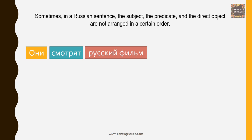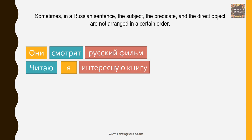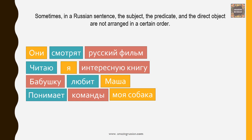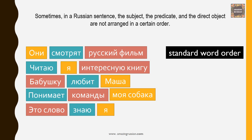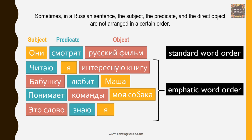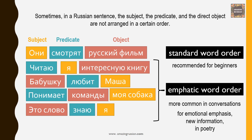Они смотрят русский фильм. Читаю я интересную книгу. Бабушку любит Маша. Понимает команды моя собака. Это слово знаю я. If we arrange the words in a Russian sentence like this, the meaning will not change. Only the first sentence is in standard word order — subject, predicate, object. The rest have emphatic word order, which is more common in conversations, used for emotional emphasis, new information, or in poetry. The standard word order is recommended for beginners.